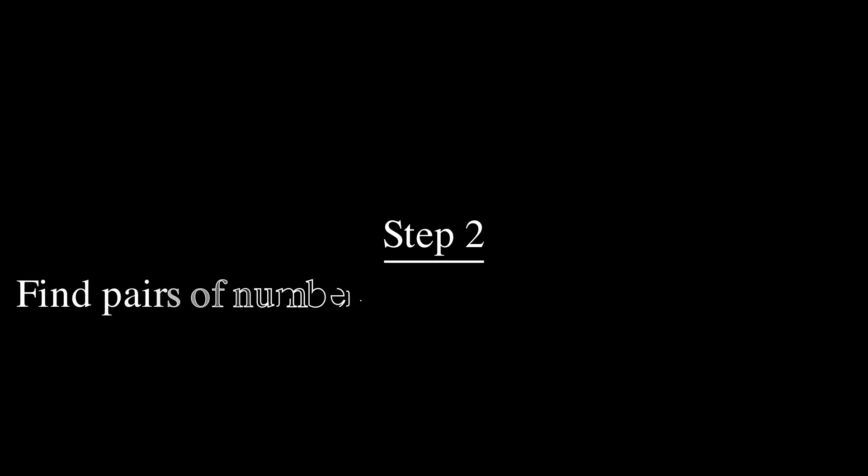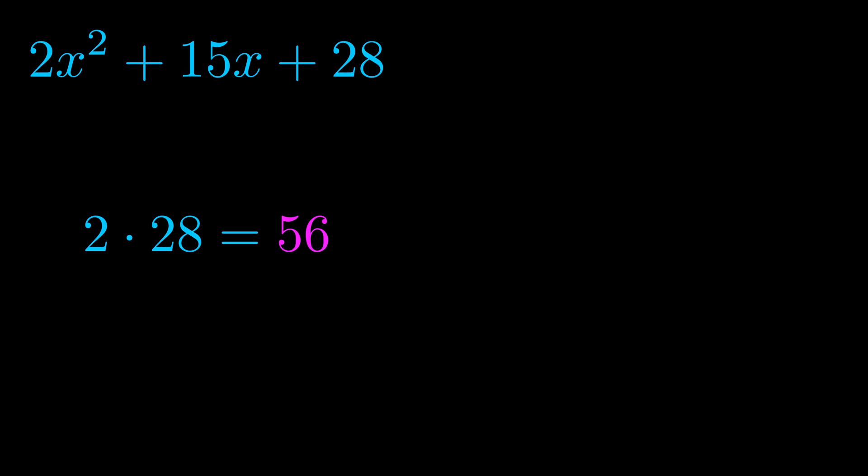Step two is to try to find all of the pairs which multiply to this number. Now turns out you don't really need to find all of them but go ahead and write down as many numbers as you can that multiply to the magenta value for now. Pause the video and resume when you're ready to continue.